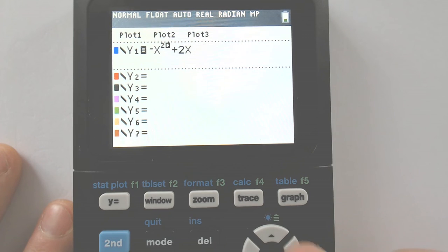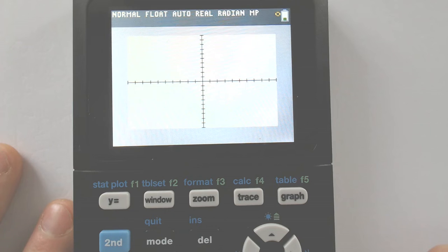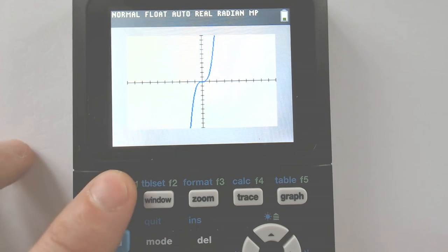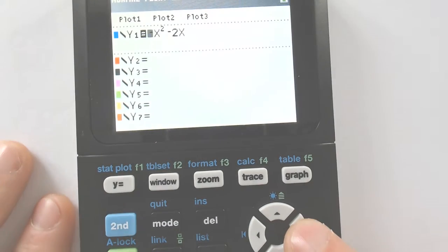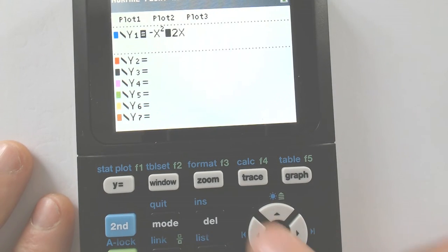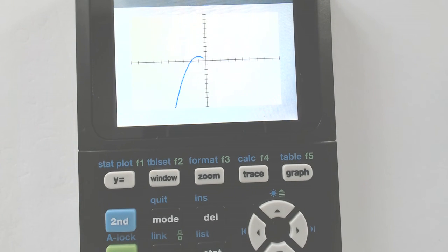But if you were to use a negative here, it would actually graph it wrong, and it probably wouldn't even say syntax. It would just graph it wrong. So make sure when you're reading this, if it says negative, use the negative button. But if it's a minus, use the bigger one that says minus 2x, and then things will graph again.